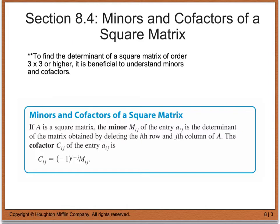The book defines: if matrix A is a square matrix, then the minor M sub IJ of the entry A sub IJ is the determinant of the matrix obtained by deleting the I-th row and the J-th column of that matrix. The cofactor uses the minor and multiplies it by negative 1 raised to a sign, and there's a shortcut we can use.